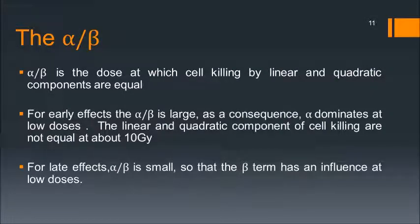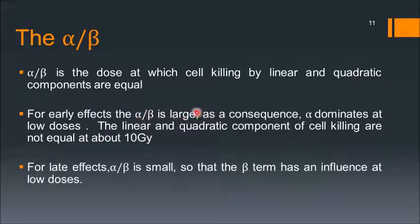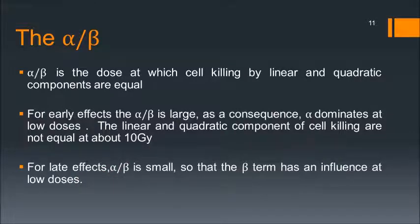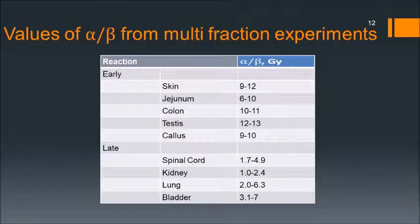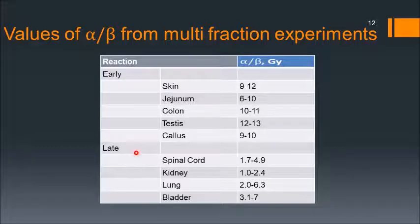The alpha/beta ratio is the dose at which cell killing by linear and quadratic components are equal. For early effects, alpha/beta is large (around 10–20), meaning alpha dominates at low doses. For late effects, alpha/beta is small (around 2–3), meaning the beta term has influence at low doses. Values from multifraction experiments confirm larger alpha/beta for early reactions and smaller alpha/beta for late reactions across various tumors and normal tissues.